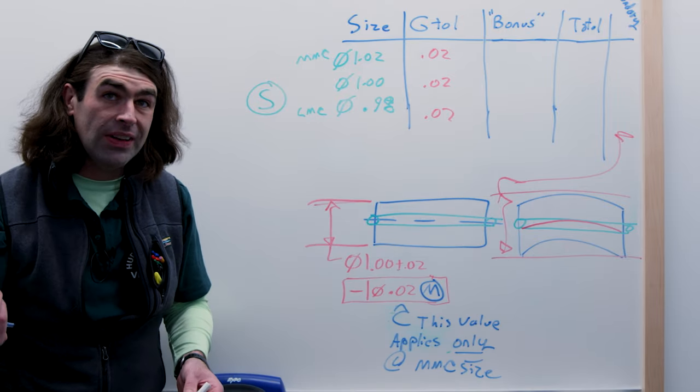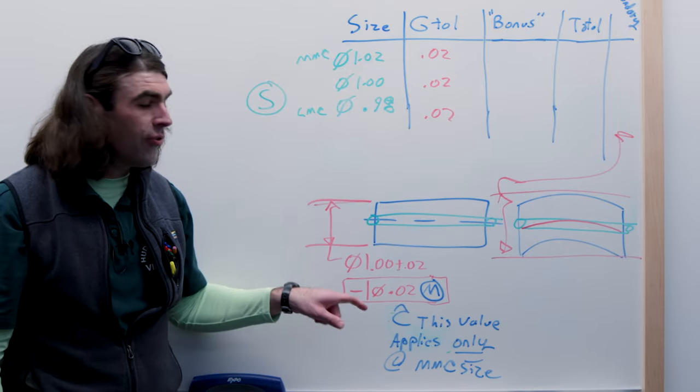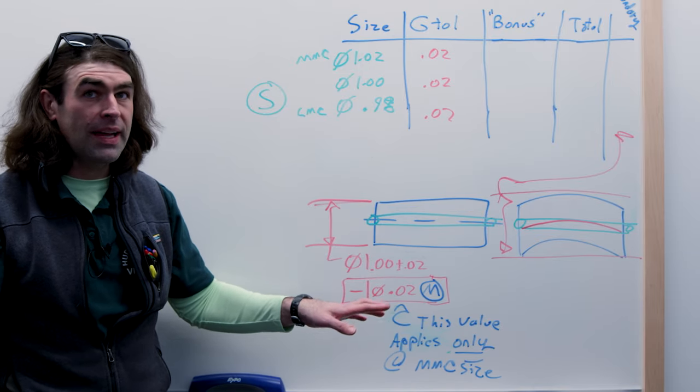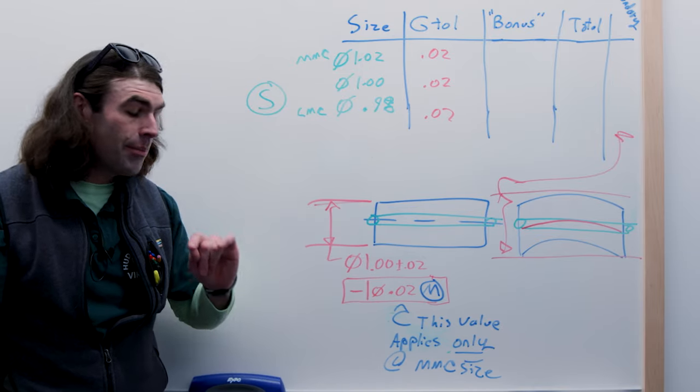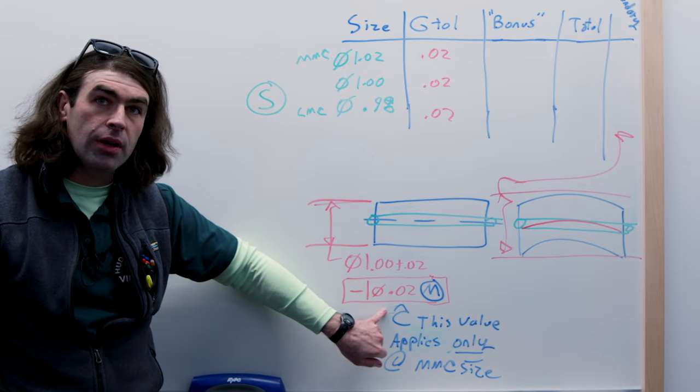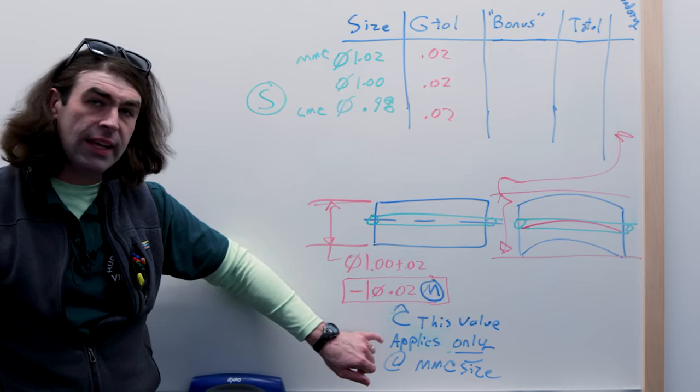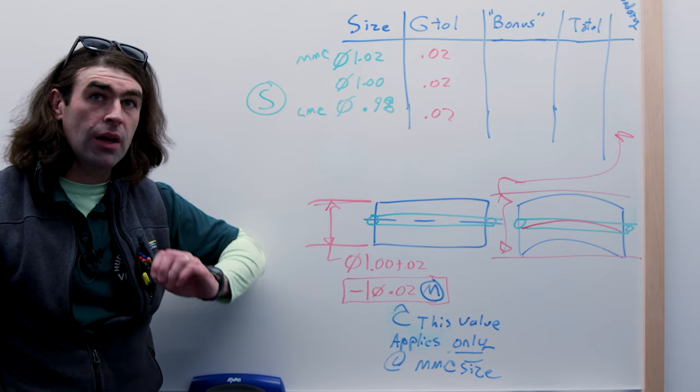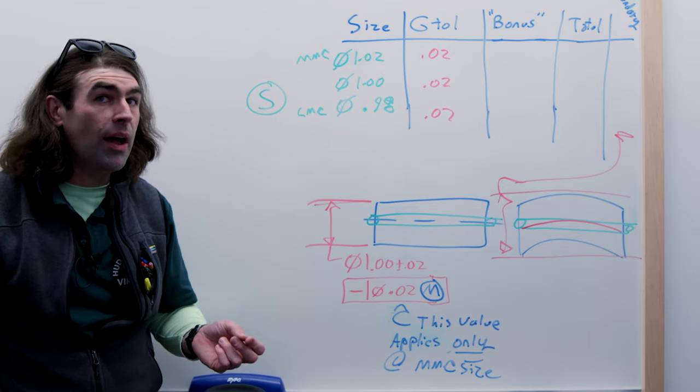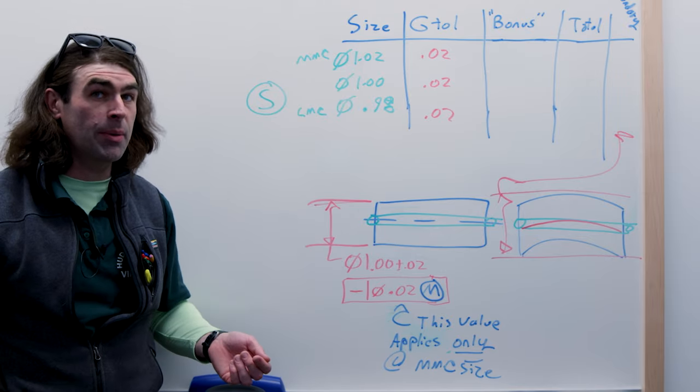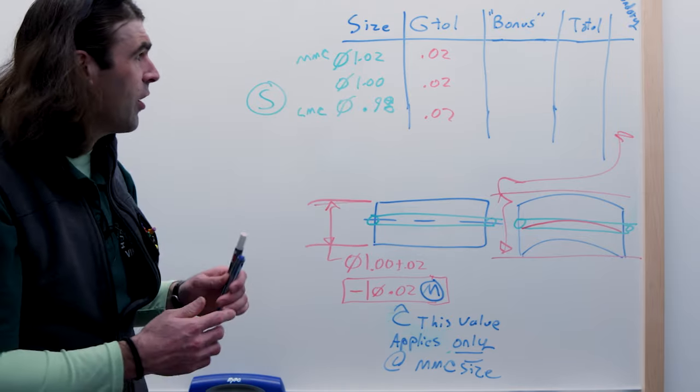Now back to our MMC symbol discussion. We're going to add the MMC symbol to the feature control frame. It's in the same box or compartment as the tolerance. That means, and this is how I would recommend you read it, this value applies only at the MMC size of the actual feature. Only. That implies that there's some other value at sizes other than the MMC. So let's draw this up here.